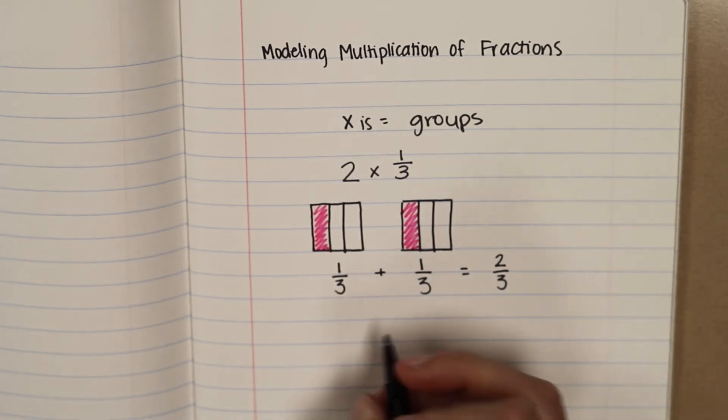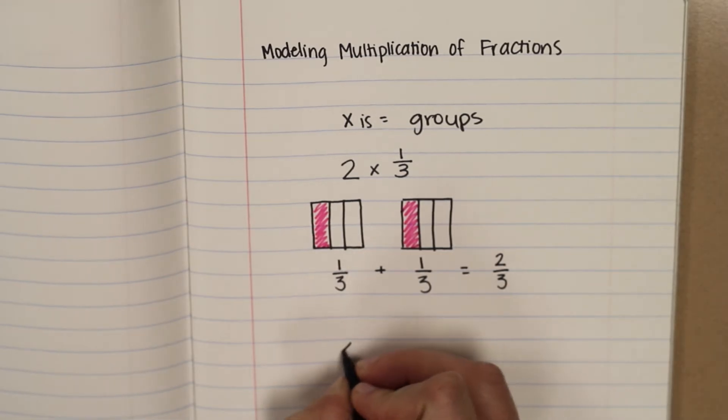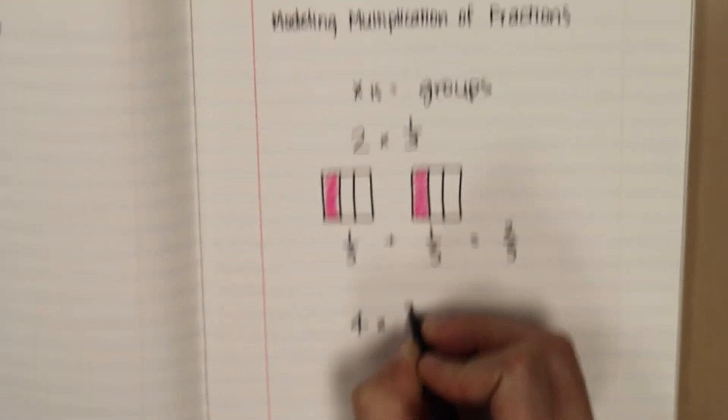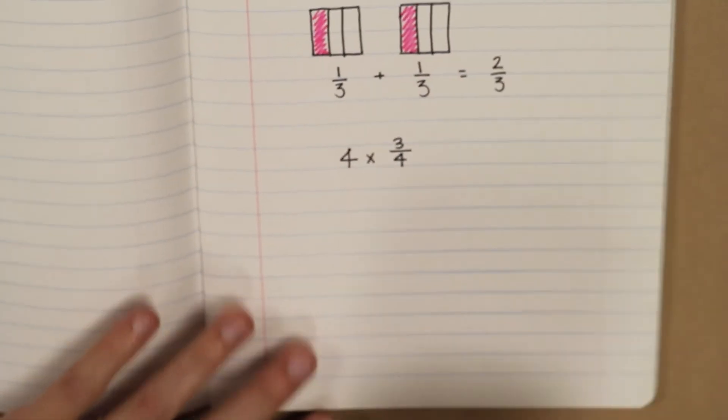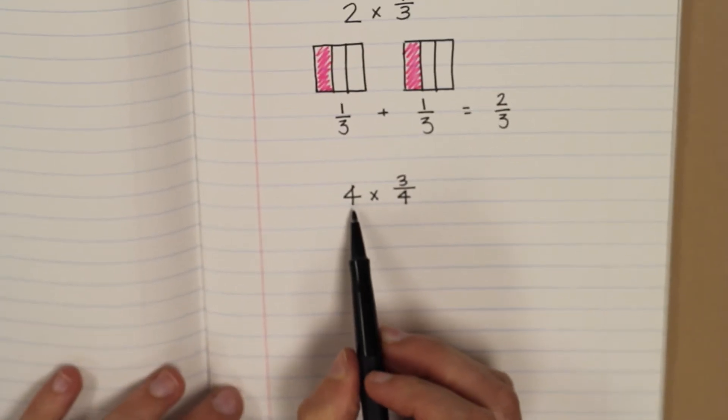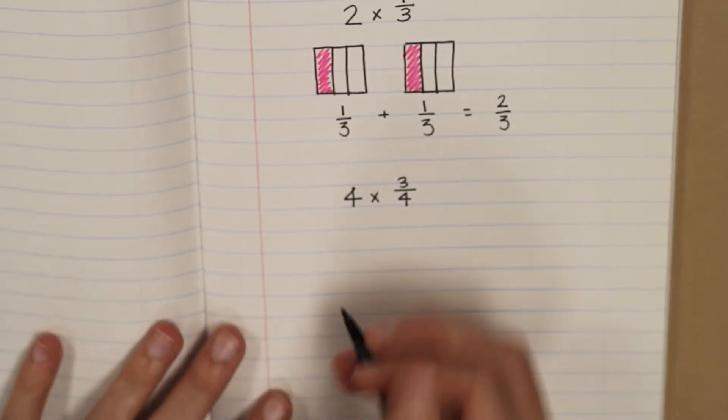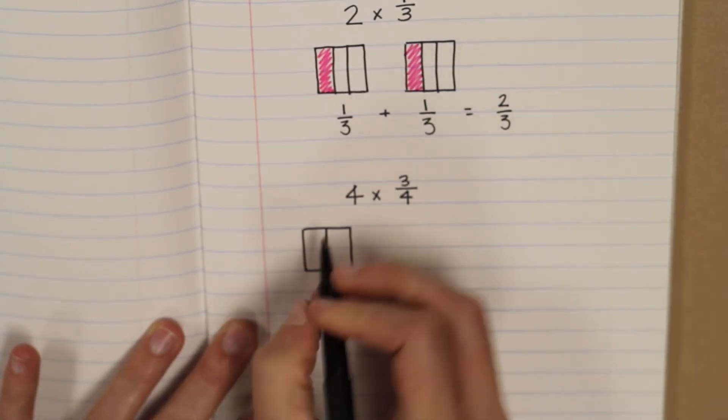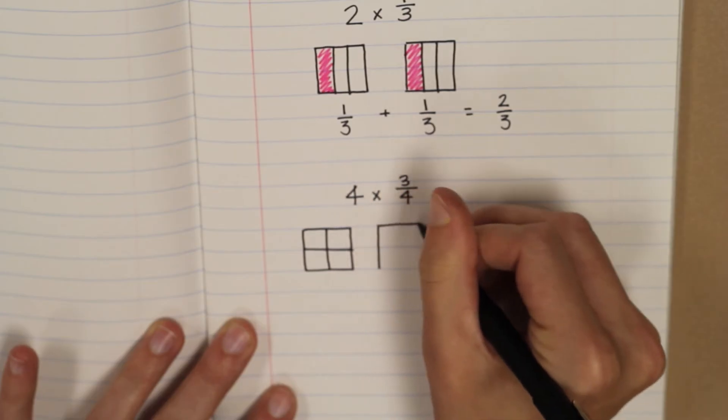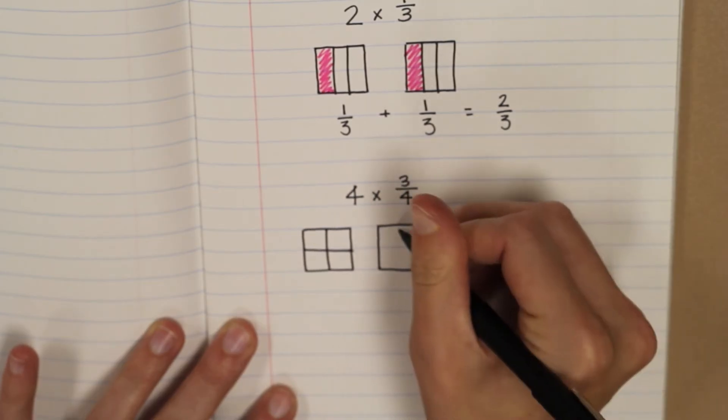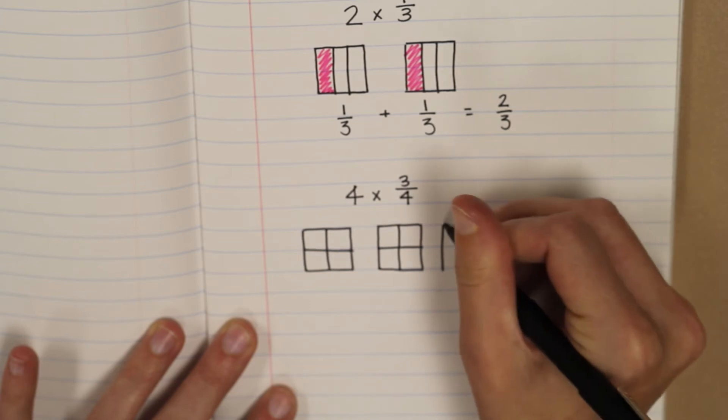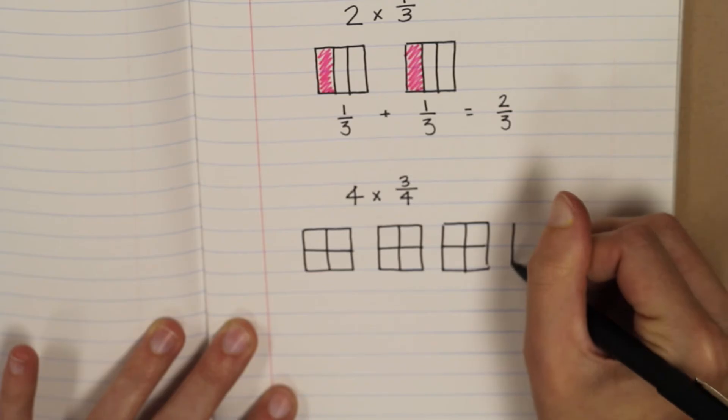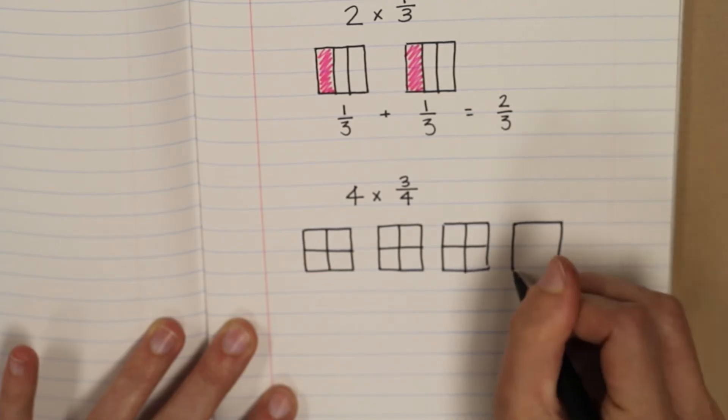So let's look at one more example. We'll do more than two groups. We'll do how about four groups of three-fourths. All right, so in this one we need to draw a picture four times. We need to draw three-fourths. So I'll draw three-fourths one time. We're going to draw three-fourths two times, three times, four times.